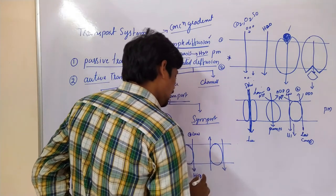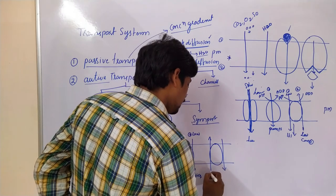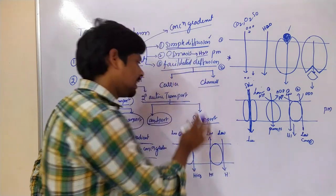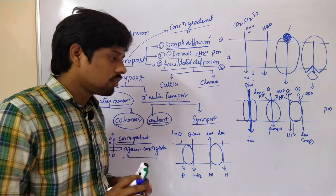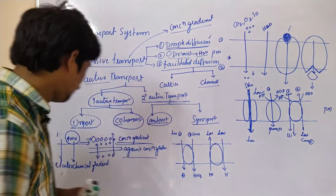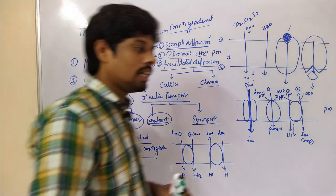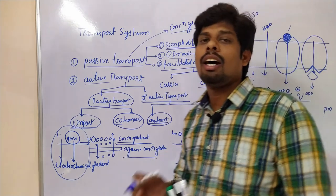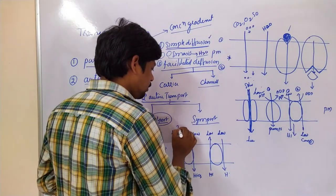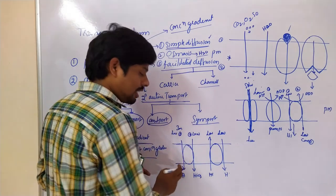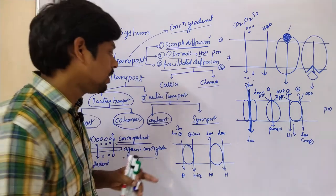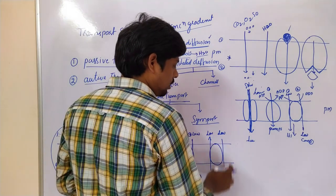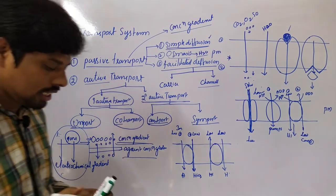Coming to antiport. Secondary active transport antiport transfers two molecules in opposite directions — one from high to low concentration and one from low to high concentration. Secondary active transport is driven not by a concentration gradient but by the electrochemical gradient. This involves transportation of ions along with non-ionic material, where the electrochemical gradient energy is utilized by the other compound to transport from lower to higher concentration.